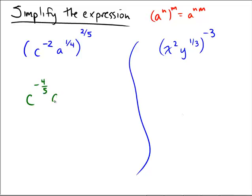And then on the other one, on the a, we have 1 fourth multiplied by 2 fifths. So a little bit of reduction there is going to leave us with 1 tenth. So a to the 1 tenth.